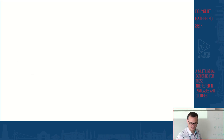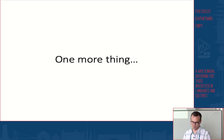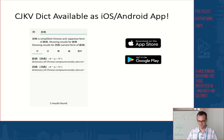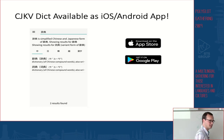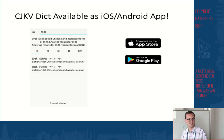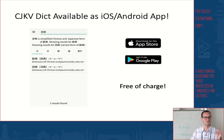Before I let you go, if you don't have internet access where you are, CJKVDICT is also available as an iOS and Android app with an offline database, downloadable from the Apple App Store and Google Play Store — completely free of charge. If you'd like to financially contribute, there is a donate button on the webpage, but it's completely voluntary.